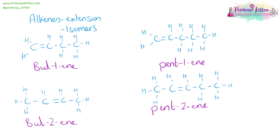Here the double bond is in carbon number one, so this is pent-1-ene. Whereas here the double bond is in carbon number two, so this is pent-2-ene.